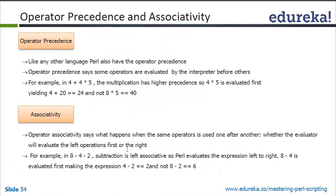For example: '8 - 4 - 2'. Subtraction is left-associative, so Perl evaluates left to right: '8 - 4' is evaluated first giving 4, then '4 - 2' equals 2 — not 8 minus 2 equals 6. Generally all associativity is from left to right, with some exceptions that go right to left.